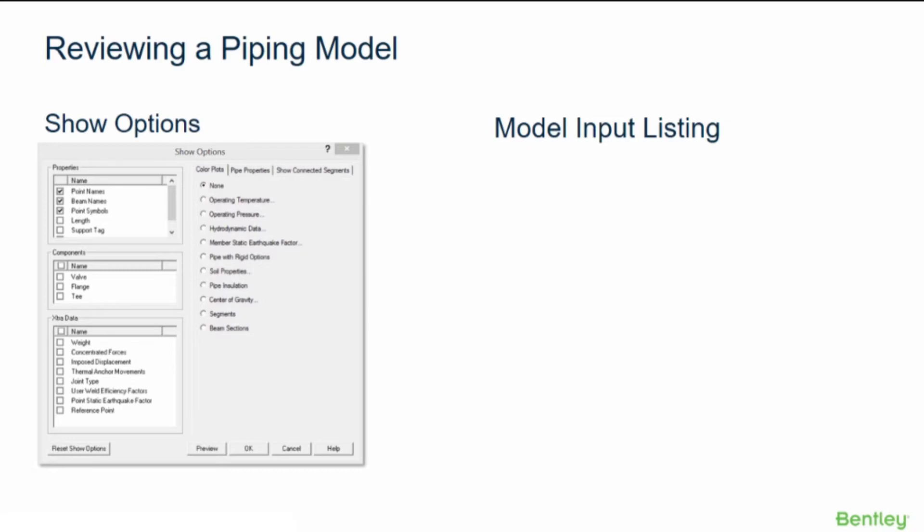You can review the properties of the model, the component information, the extra data information, color plots for inputs like temperature, pressure, and soil properties, color plots for pipe properties, and connected segments.